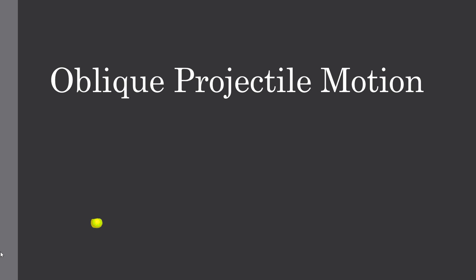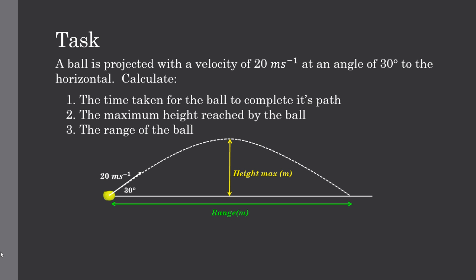Welcome to this tutorial video. Today's topic is oblique projectile motion. The task we have at hand today is considering a ball that is projected at a velocity of 20m per second at an angle of 30 degrees to the horizontal. We are asked to calculate the time taken, the maximum height reached by the ball, and the range of the ball.